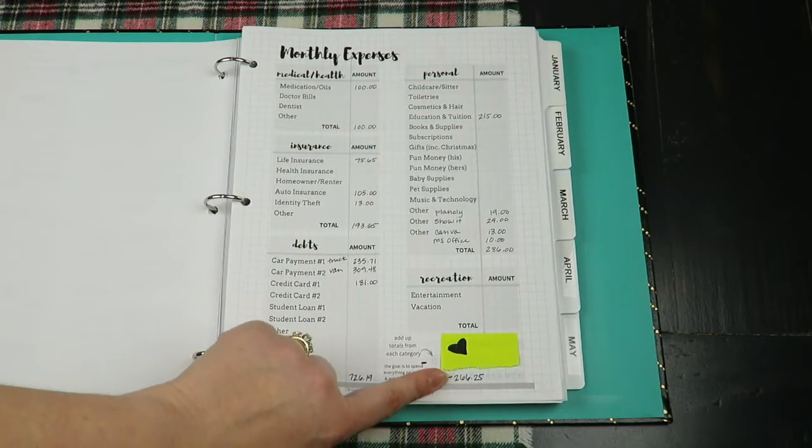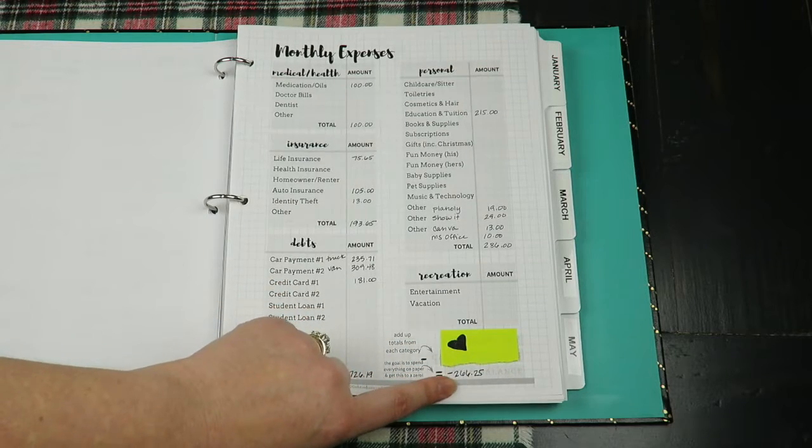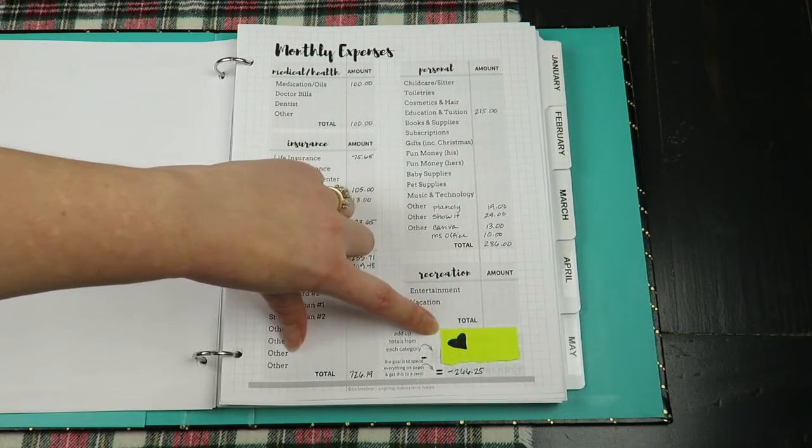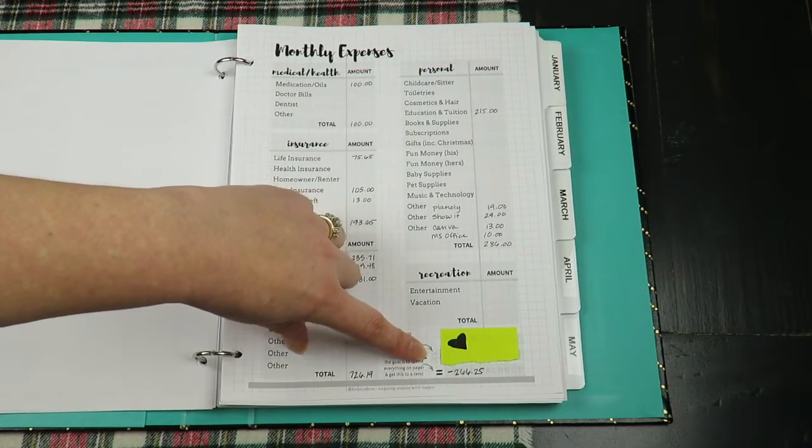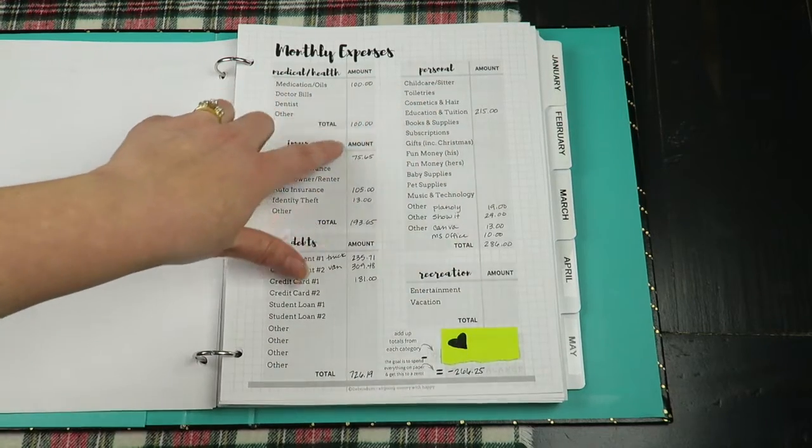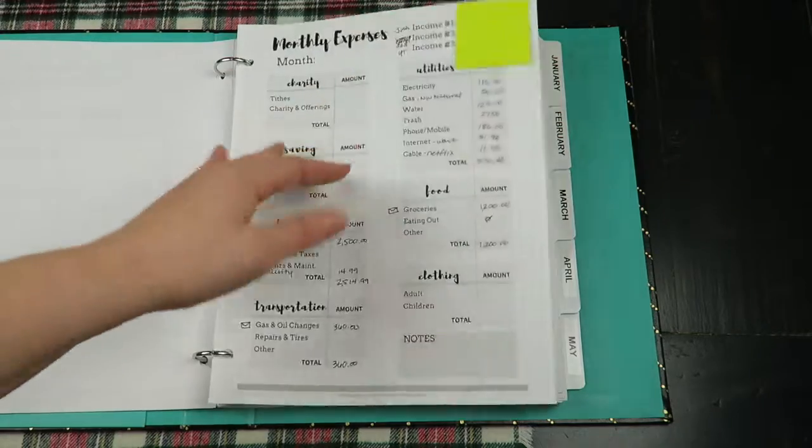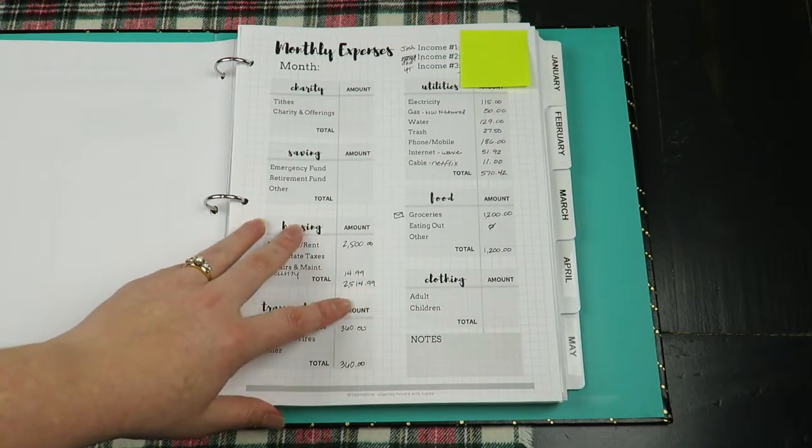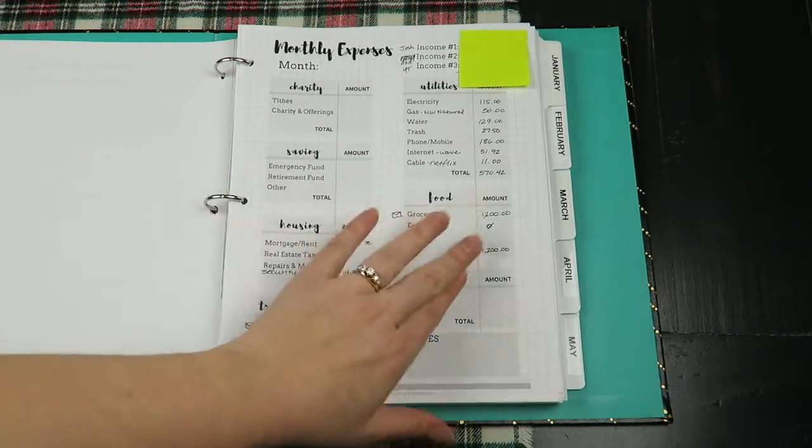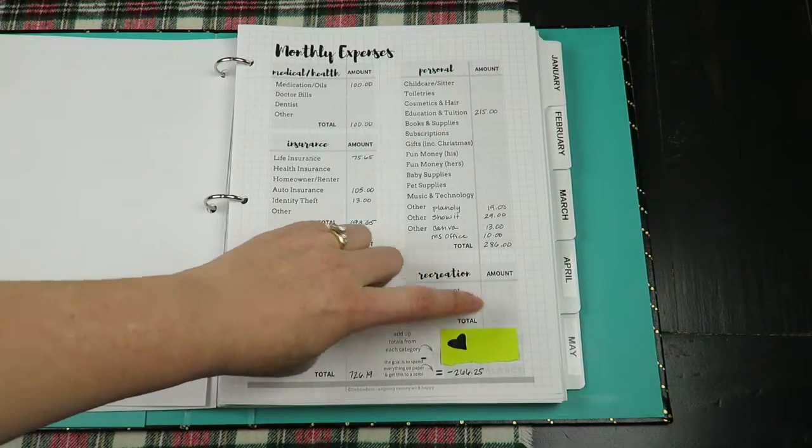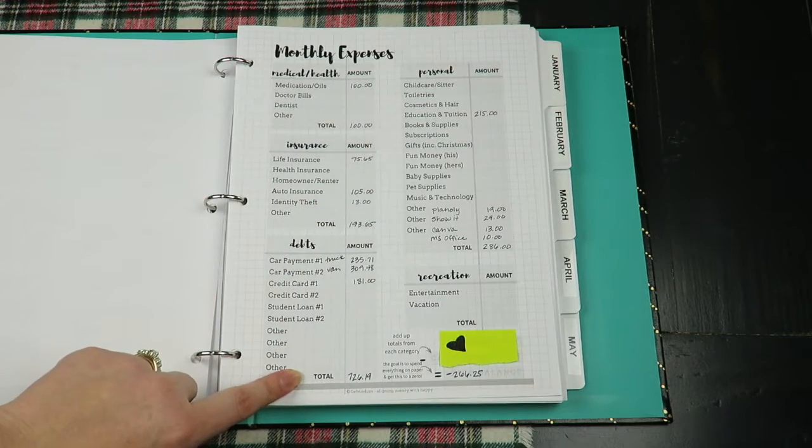You'll see down here my hubby's income. What you want to do is take your income minus your category totals. You'll see all your totals down here. You want to add up all of those totals. That's why I love this sheet, it makes it super simple. Then you want to take your income minus your category totals and that's what you're left with. This is supposed to equal zero.